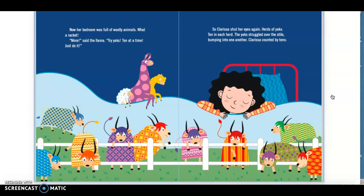Now her bedroom was full of wooly animals. What a racket! More, said the llama. Try yaks, ten at a time. Just do it. So Clarissa shut her eyes again. Herds of yaks, ten in each herd. The yaks struggled over the stile, bumping into one another. Clarissa counted by tens.